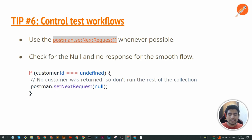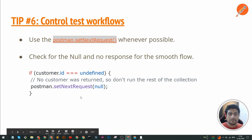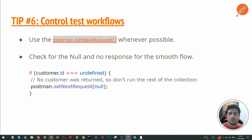Another important feature: if you have a collection with five requests and under a certain condition — for example, if you don't get a response from the second request and you want to jump to the fourth — you can use Postman's feature to control the test flow. In the test tab, you can write that if the condition of ID is null, go to request number four by mentioning its name. This way you can control the flow and jump from request two to four, four to five, three to five, and so on.